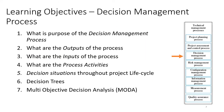The learning objectives for this video are to discuss the purpose of the decision management process, then the outputs, inputs, and process activities of the decision management process, look at the kinds of decisions that can occur throughout the project lifecycle, some examples, and then to discuss the types of decision making discussed in the handbook — namely decision trees and multi-objective decision analysis.